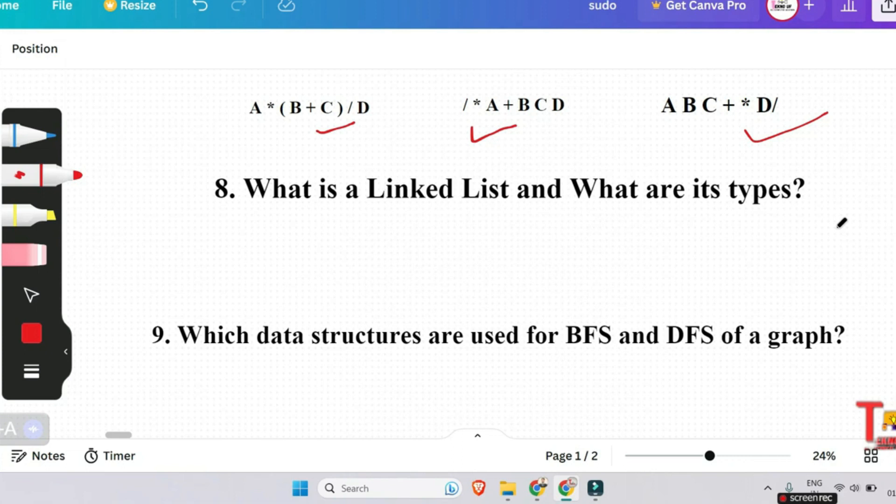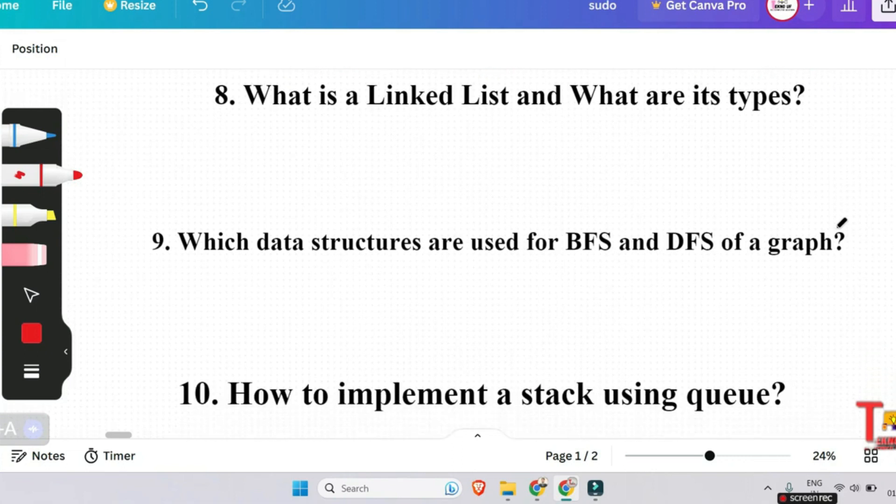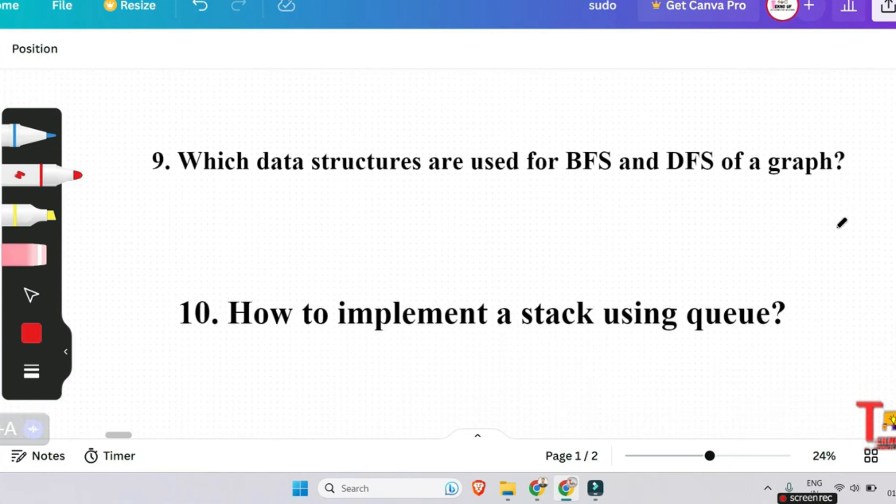So the next question is which data structures are used for BFS and DFS of a graph? Queue is used for BFS, that is breadth first search, and DFS, that is depth first search, can also be implemented using recursion.